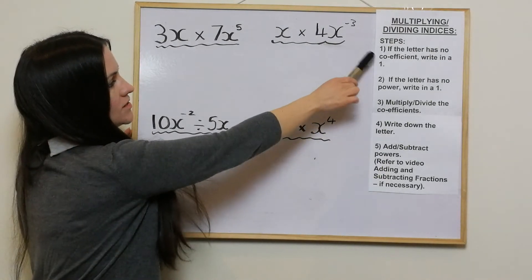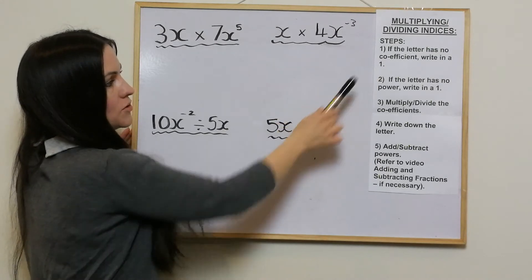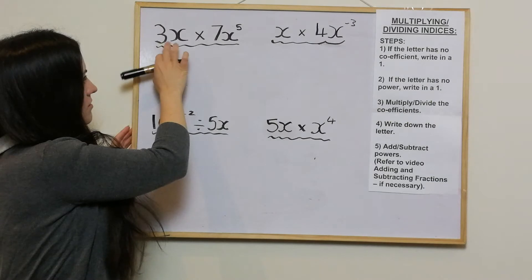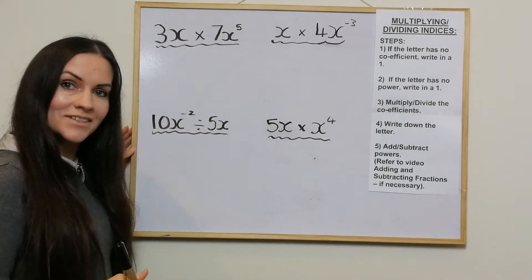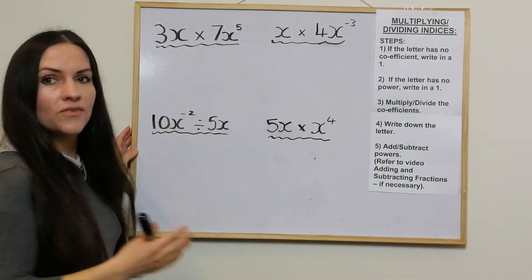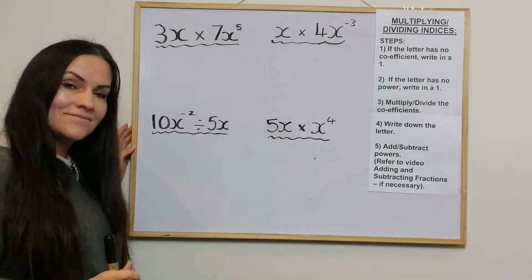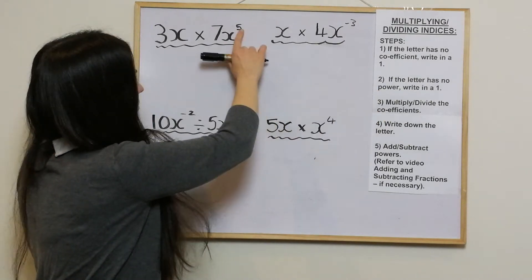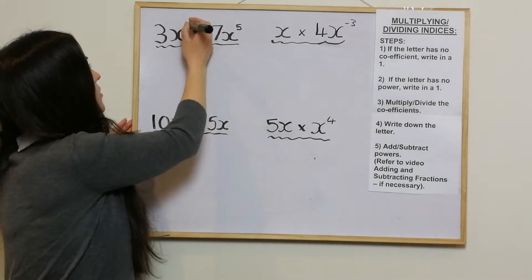The first step says: if the letter has no coefficient, write in a number one. So I'll start with this one here — 3x times 7x to the power of 5. Both of these letters have coefficients, so I don't need to write in a coefficient. The next step says: if the letter has no power, write in a one. So this one doesn't have a power, so I'll write in a one.